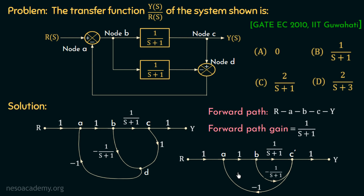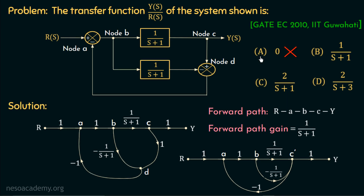We will definitely get this wrong signal flow graph if we consider the summing point and the takeoff point as a single node. If we observe this wrong signal flow graph, there are two forward paths: R-A-B-C dash-Y with gain 1 over S plus 1, and a second forward path with gain minus 1 over S plus 1. When we apply Mason's gain formula to this wrong signal flow graph, we get the overall transfer function equal to 0, which is option A. But this is the wrong answer. Many students attempting this problem would have drawn this signal flow graph and got this answer.